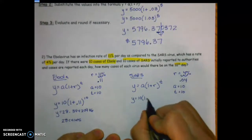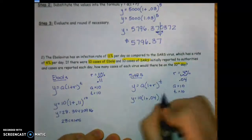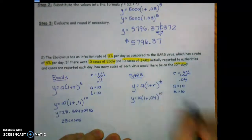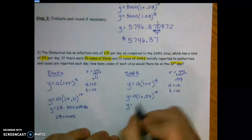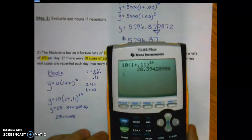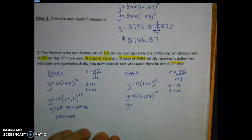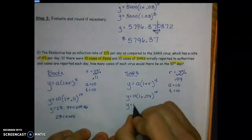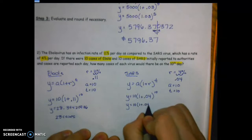Now for SARS: y = 10(1 + 0.04)^10, which simplifies to 10 × (1.04)^10. You can simplify first or plug it straight in — you'll get the same answer either way.